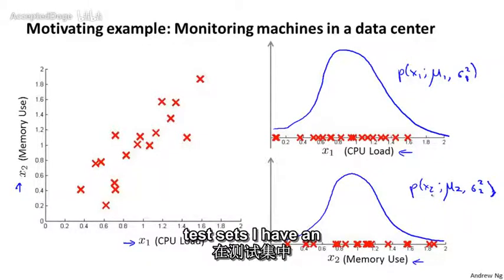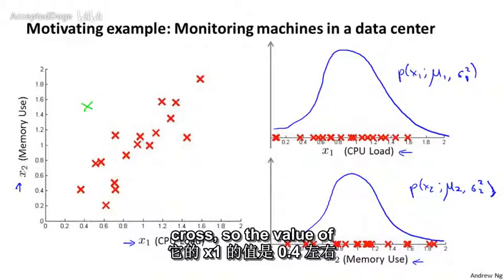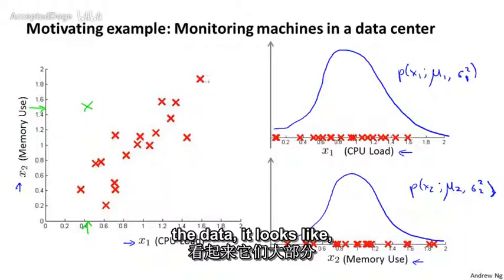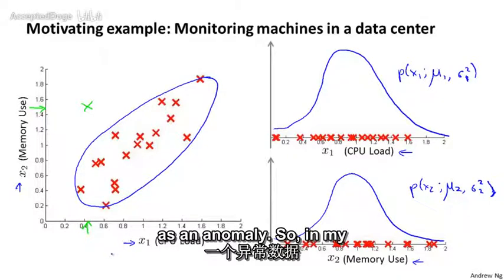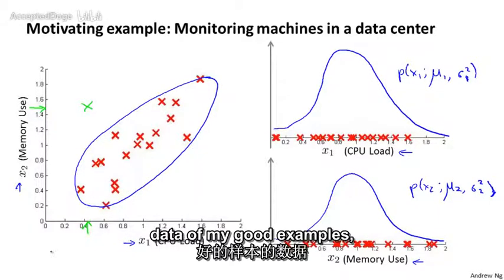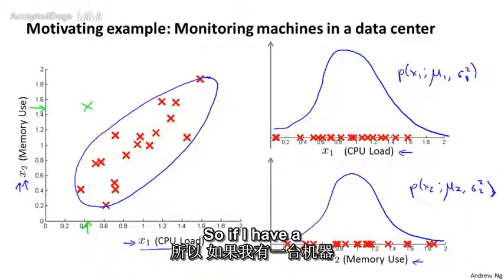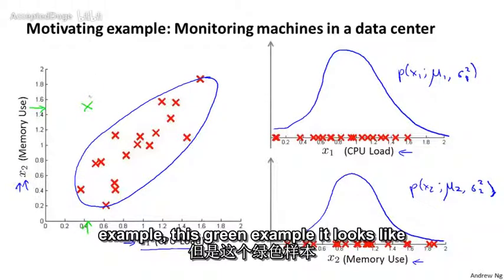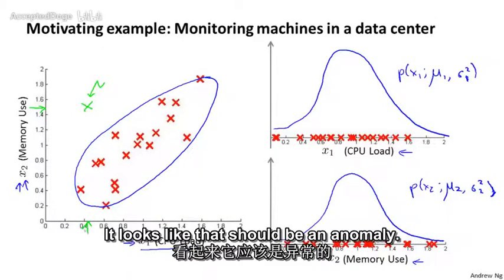Now let's say that in the test sets I have an example that looks like this, the location of that green cross. So the value of x1 is about 0.4 and the value of x2 is about 1.5. Now if you look at the data, it looks like most of the data lies in this region and so that green cross is pretty far away from any of the data I've seen. It looks like that should be raised as an anomaly. So in my data, in the data of my good examples, it looks like the CPU load and the memory use, they sort of grow linearly with each other. So if I have a machine using lots of CPU, memory use will also be very high. Whereas this example, this green example, it looks like here the CPU load is very low but the memory use is very high and I just have not seen that before in my training set. It looks like that should be an anomaly.